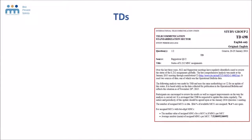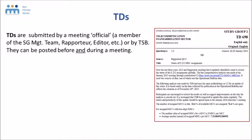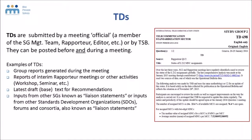The next important input document is the TD. TDs are submitted by a meeting official — that is to say either a member of the study group management team, a rapporteur, an editor, or by the TSB secretariat. These can be posted before and during a meeting, which is very different from contributions, which have to be received at least 12 calendar days before the study group starts. Examples of TDs are agendas, group reports generated during the meeting, and the latest draft text for recommendations or liaison statements.